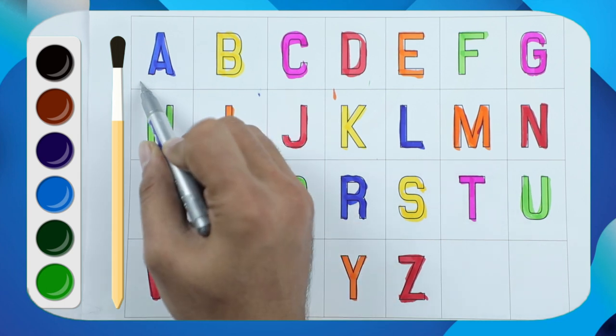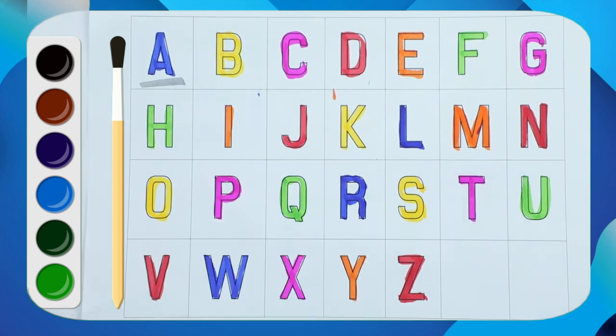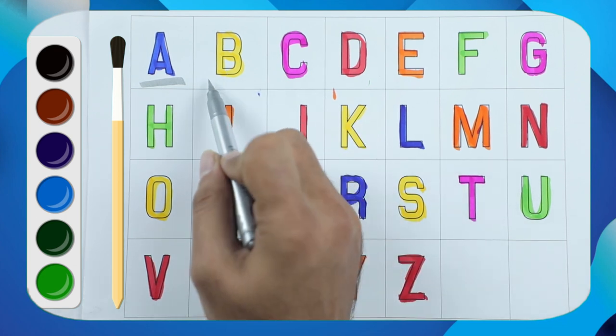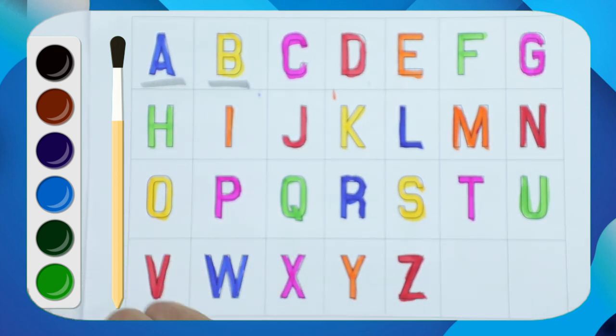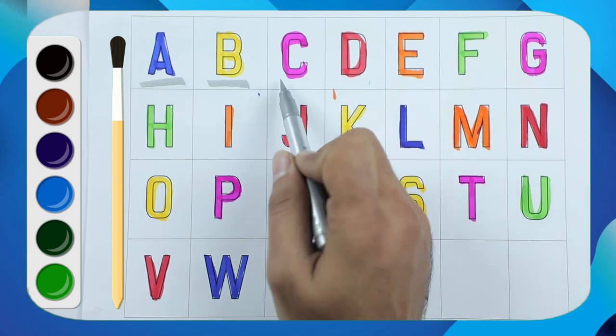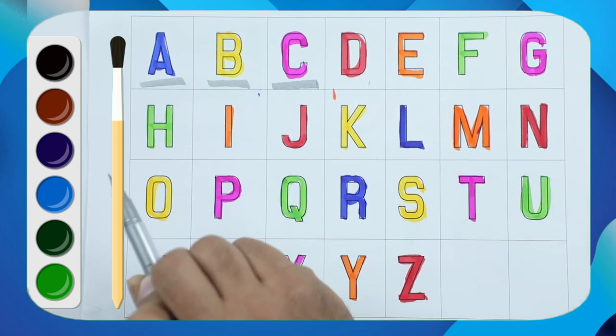It's A, capital A. B, B with yellow color. C, pink color C.